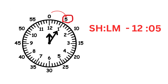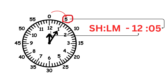Here, the short hand points just past 12 and the long hand points at 1. For the short hand, look at the inside numbers — short hand is pointing at 12, so the hour is 12. For minutes, look at the outside numbers — long hand is pointing at 1, and the outside number for 1 is 5, so the minutes is 5. The clock shows 12:05.